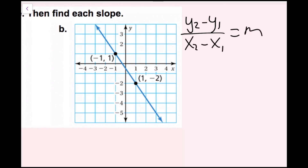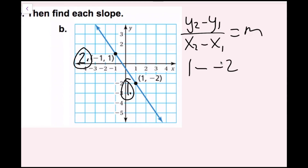The formula y2 minus y1 over x2 minus x1 equals slope. This is just the y value of one point minus the y value of the other point, divided by the corresponding x values in the same order. It doesn't matter which point you call point one and point two. I'm going to call one point number two and the other point number one. So y2 is the y component of point number two, which is one, and y1 is the y component of point number one, which is negative two. So that gives me one minus negative two in the numerator. I'll put parentheses around the negative two.